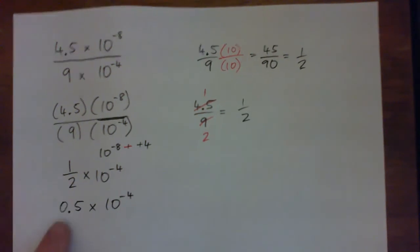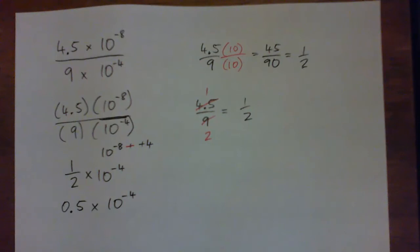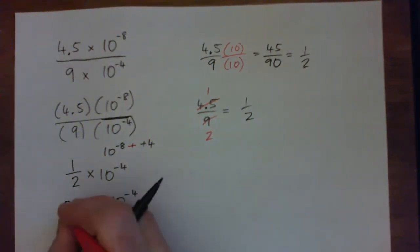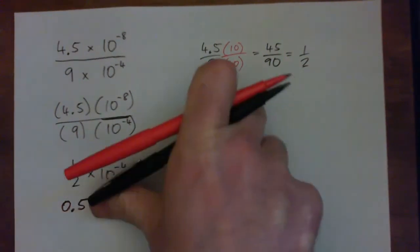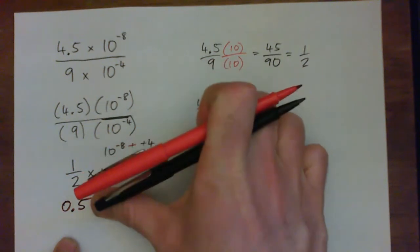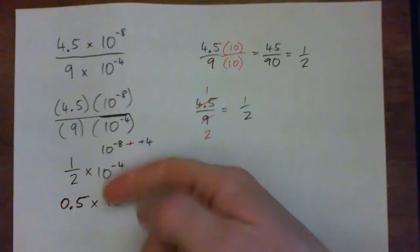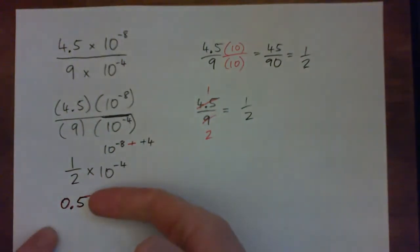Because for scientific notation, you need an actual significant digit to the left of the decimal point in the unit spot. You can't have a 0 there. So we're going to work on this. We're going to ignore the 10 to the negative 4 and we're just going to turn 0.5 into scientific notation all on its own. So what I want you to do is press pause on the video and just turn 0.5 into scientific notation all by itself.